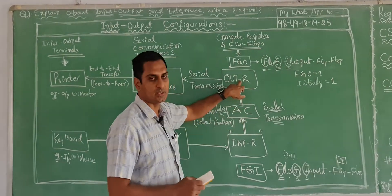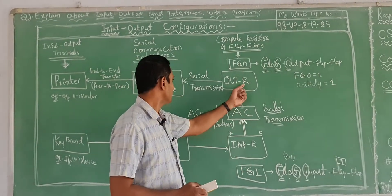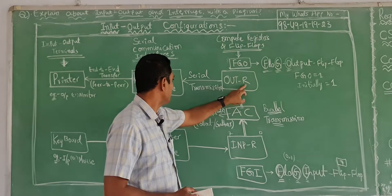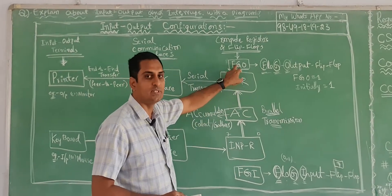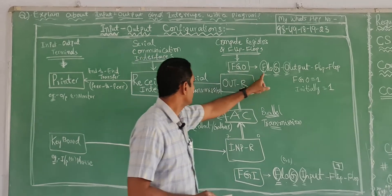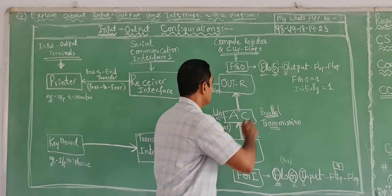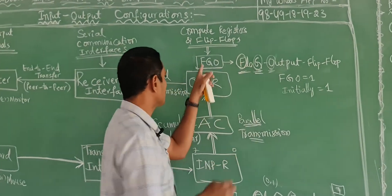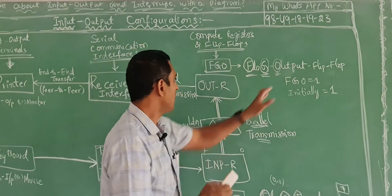It will send it to output register, from input to output register. Output register, same OUTR. Here also we have FGO, here FGI, here FGO. F stands for flag, G has taken as shortcuts, O stands for output.